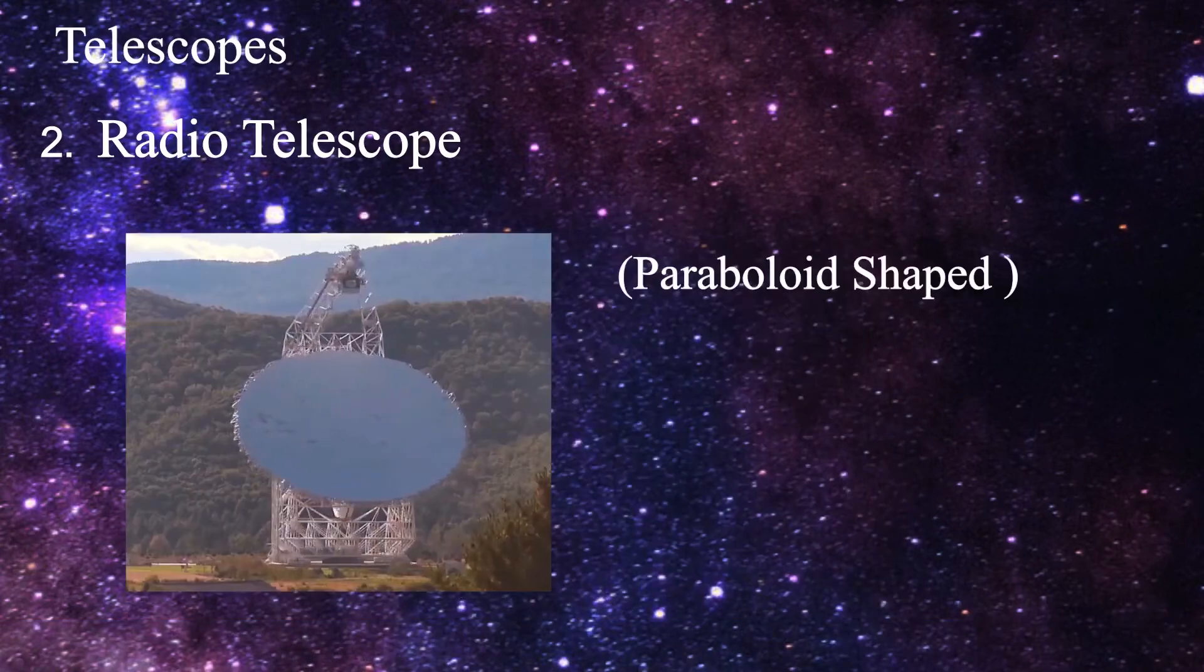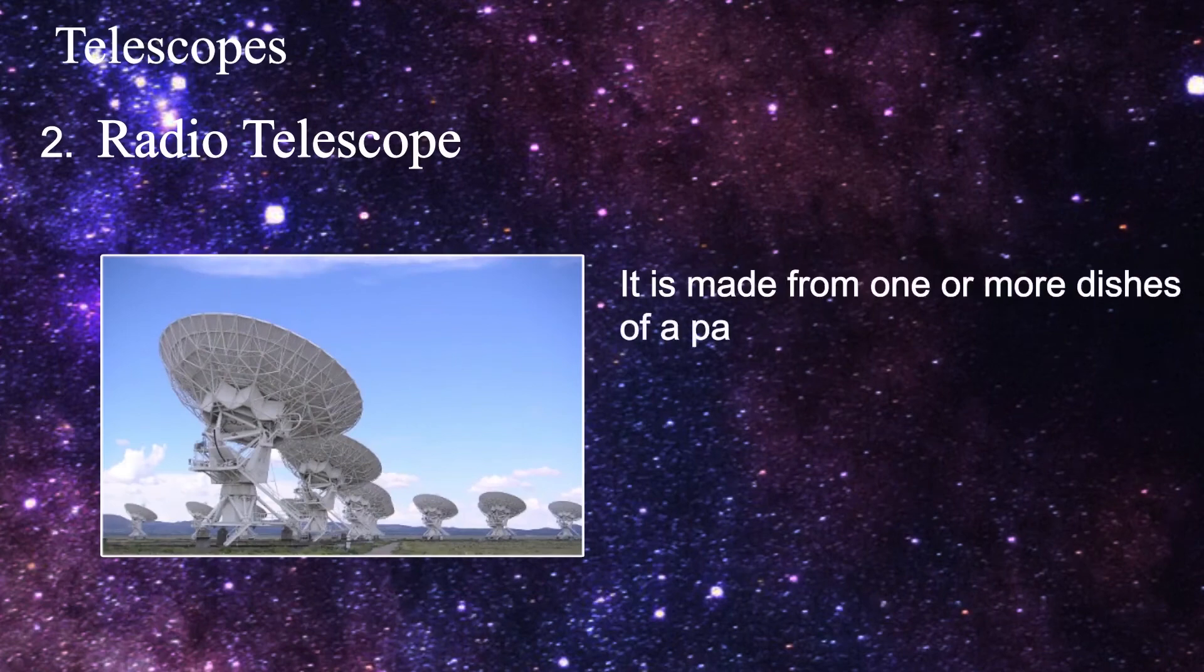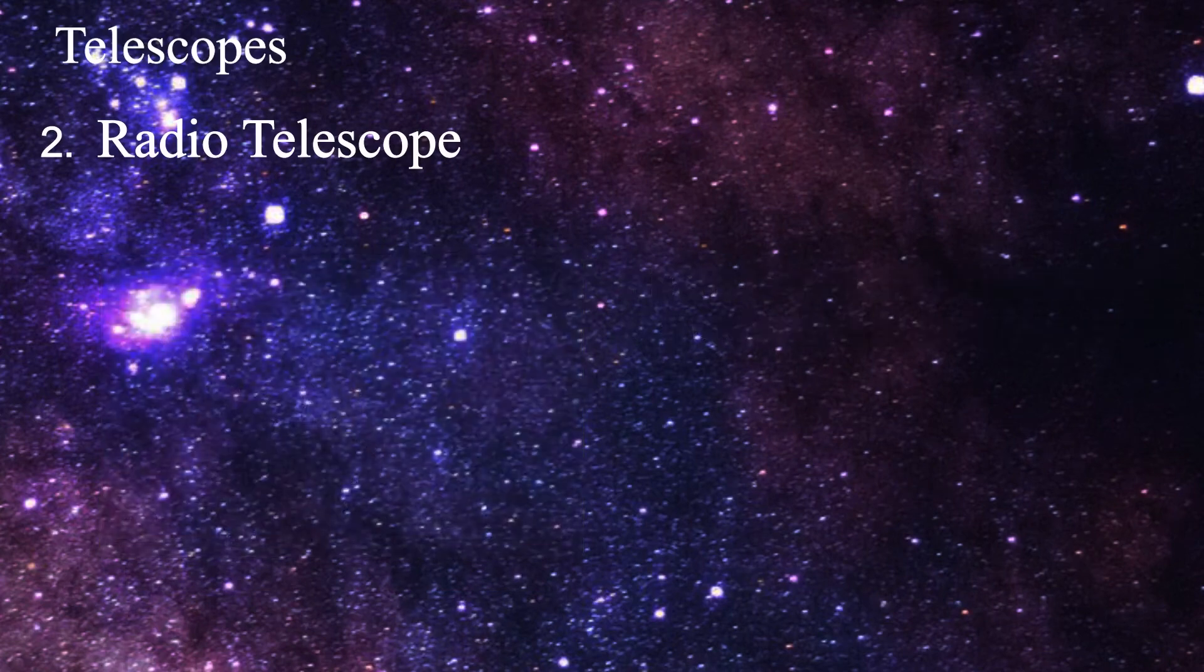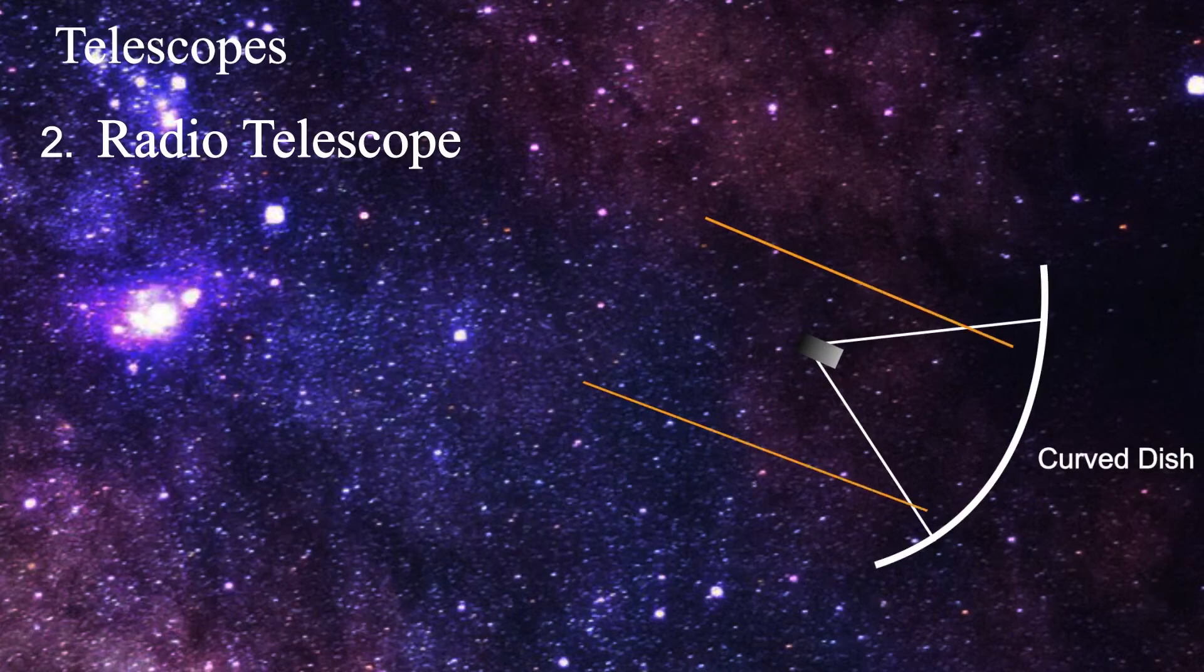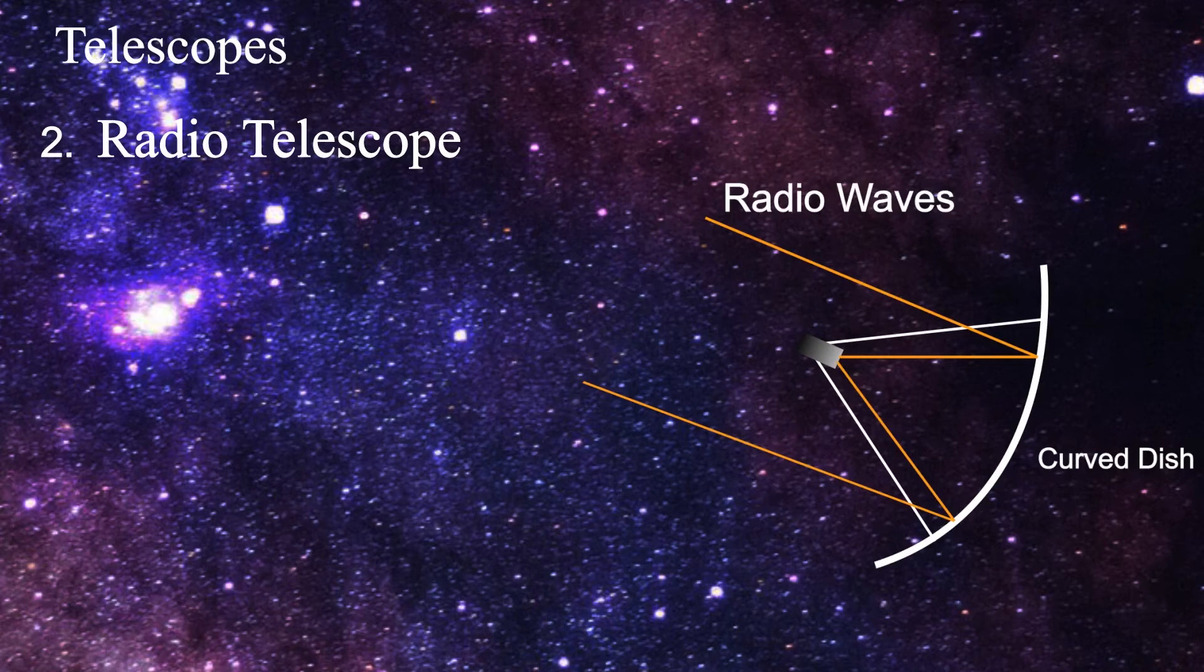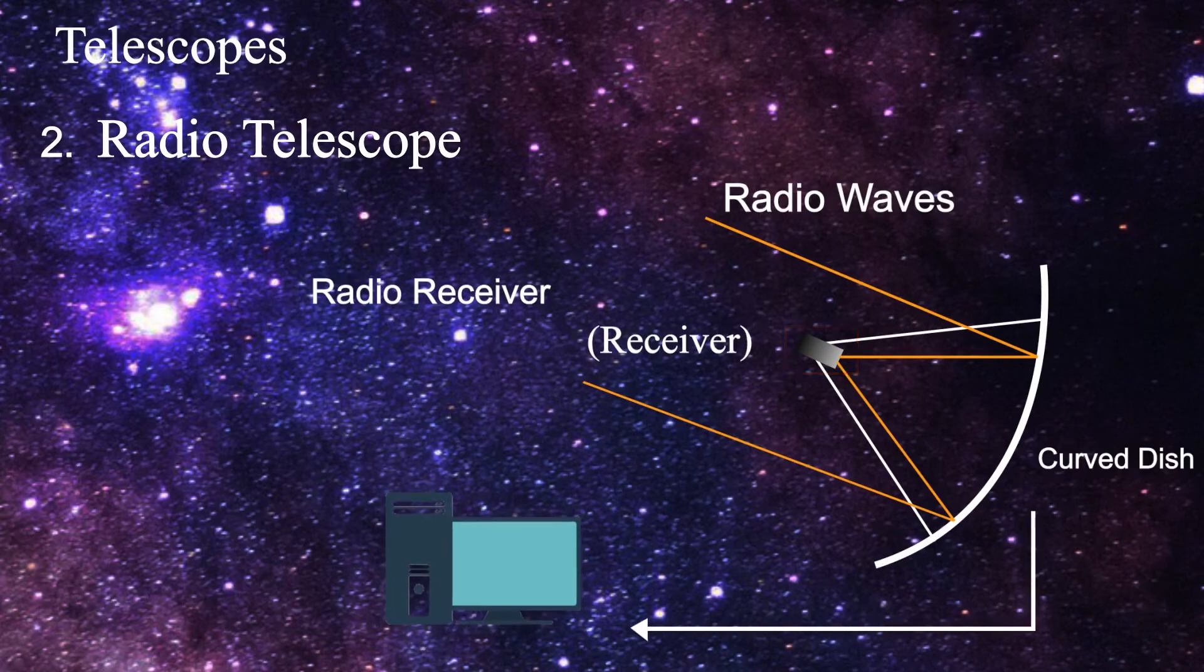It is made from one or more dishes of a particular parabolic shape. As in an optical telescope, the incident radio waves are reflected by these dishes and converge at the focus. A radio receiver is placed at the focal point.